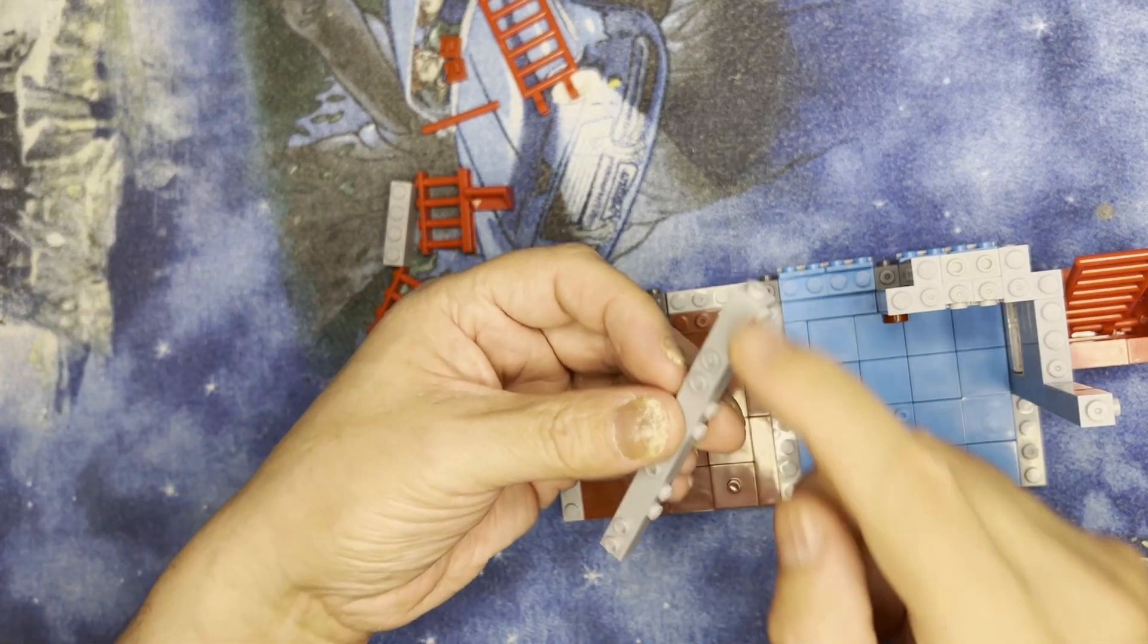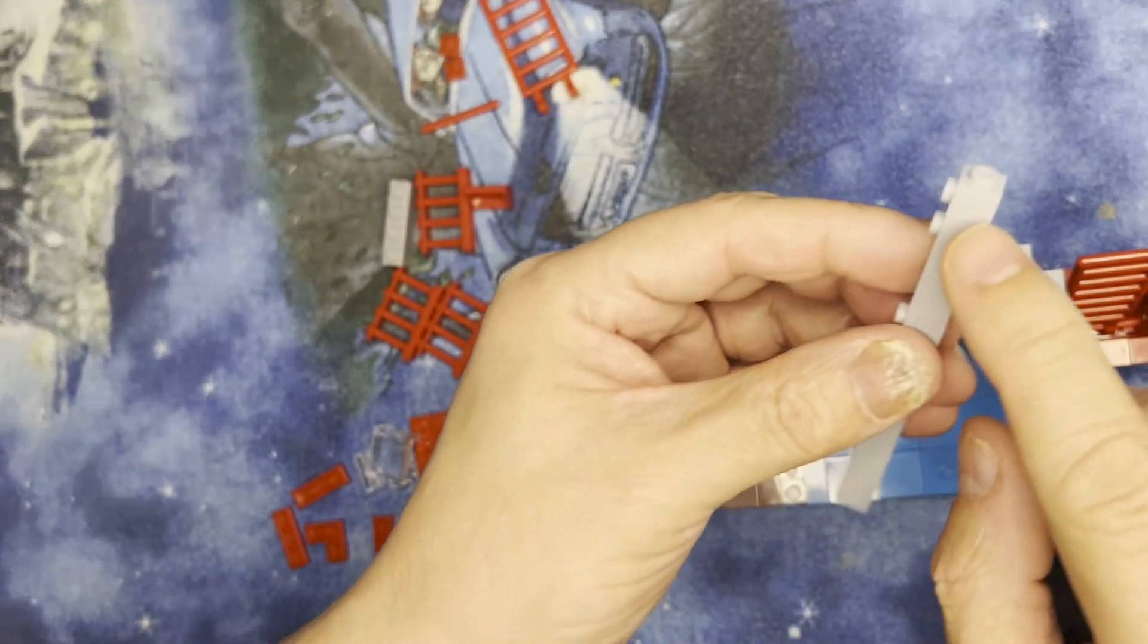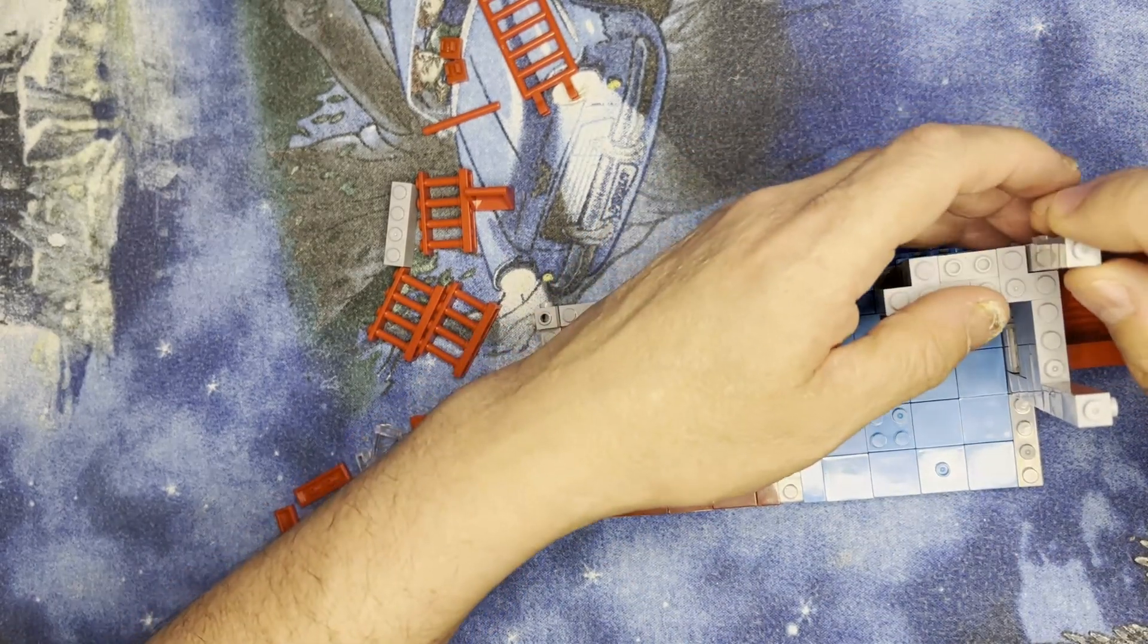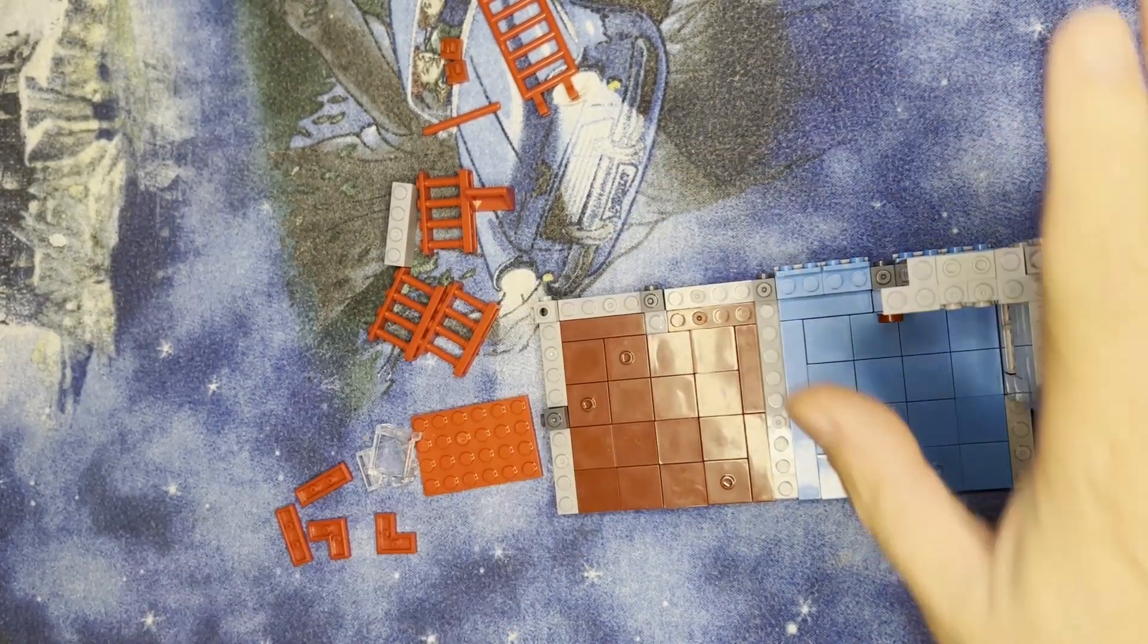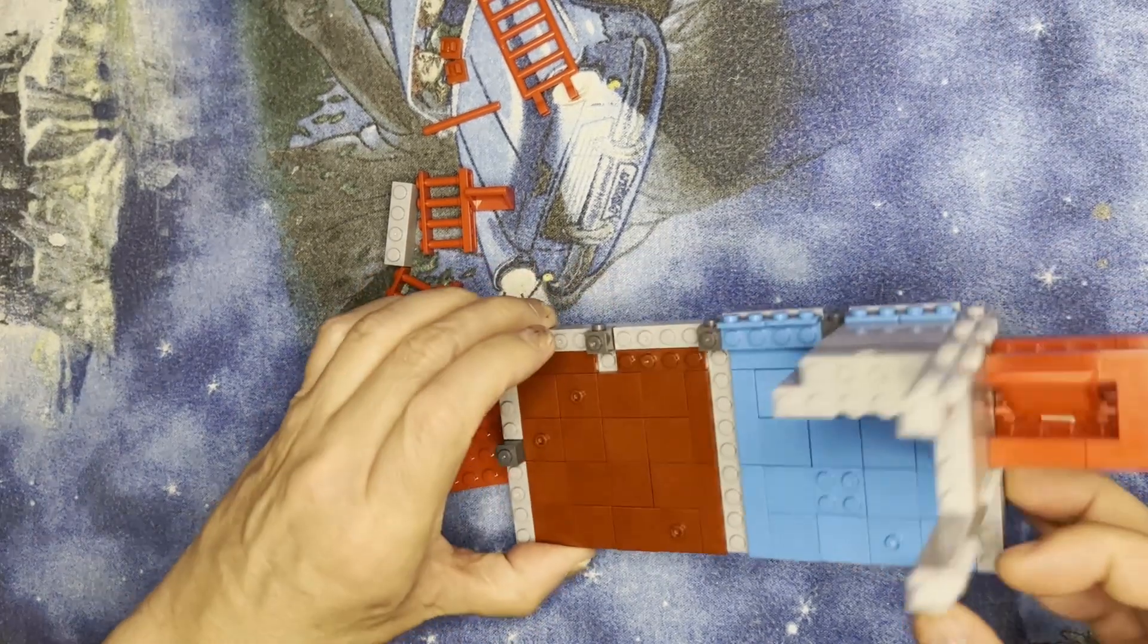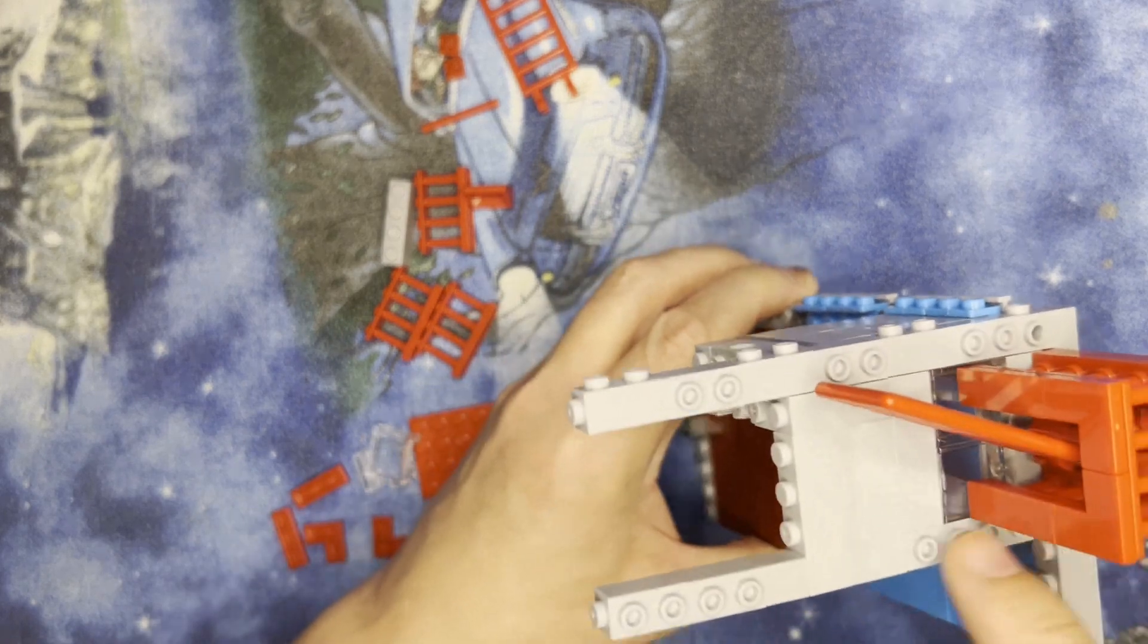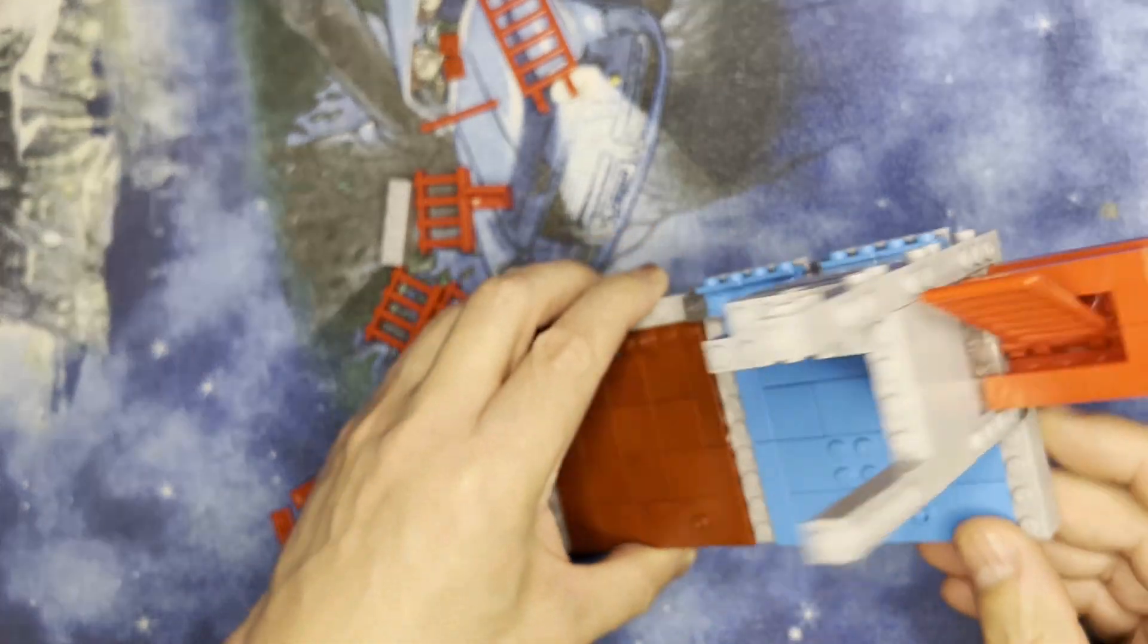And you have to alternate these because there's gonna go decorative trim on the outside, so you want this flat part here to go up against in that corner. Just like that, and that will give you that corner decoration, just like this is gonna have corner decoration as well.